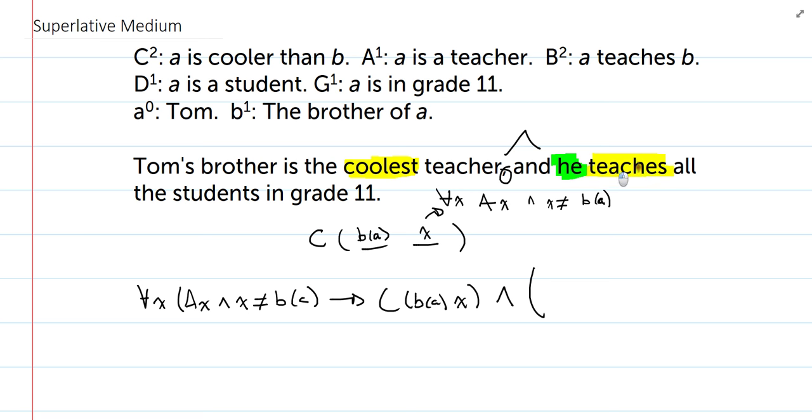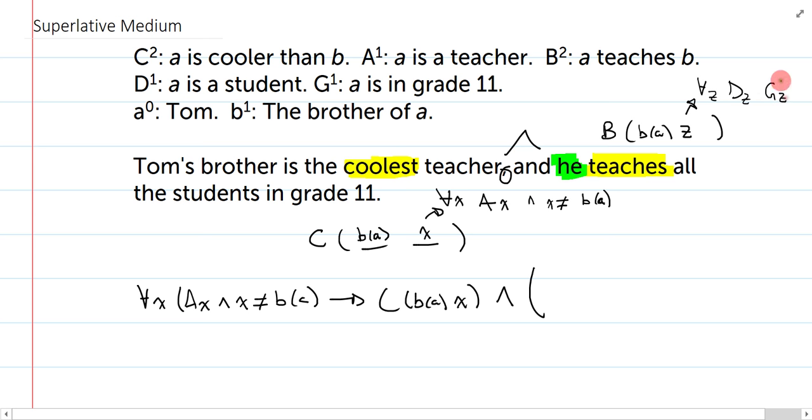So, here, the key property is teaches, and so teaches is the B predicate, and now I need to say variables. Now, I've already used x. x is all other teachers, so I'm going to use two new letters, y and z. Well, actually, do I need y and z? No, because it says he teaches. So, what actually goes in place of my y? Well, he is Tom's brother, and I know how to write that. That's just B of A. That's actually really nice. He teaches all the students in grade 11.